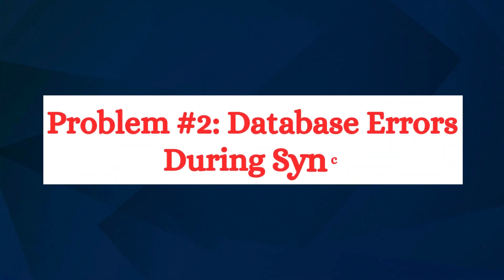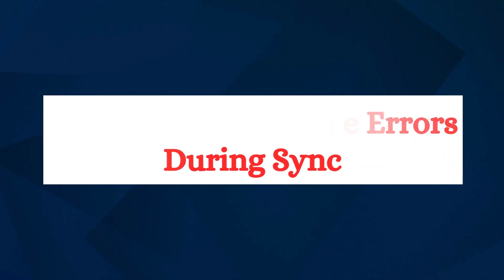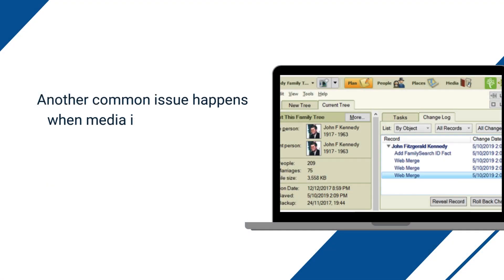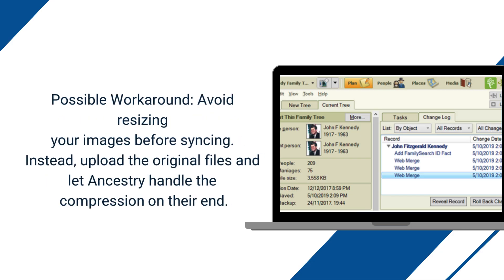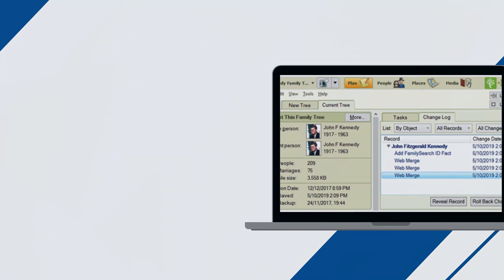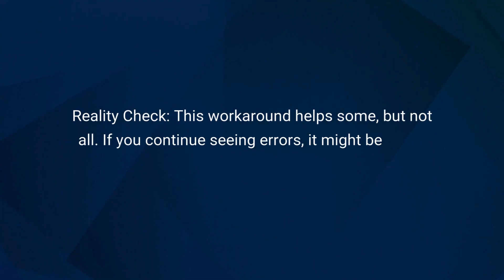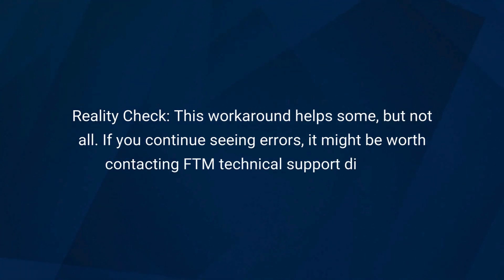Problem number two: database errors during sync. Another common issue happens when media is resized before syncing with Ancestry — this can trigger a database error message, interrupting the sync process. Possible workaround: avoid resizing your images before syncing. Instead, upload the original files and let Ancestry handle the compression on their end. Reality check: this workaround helps some, but not all. If you continue seeing errors, it might be worth contacting FTM technical support directly.